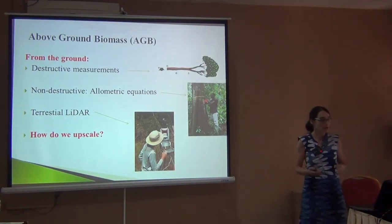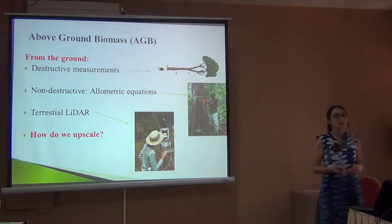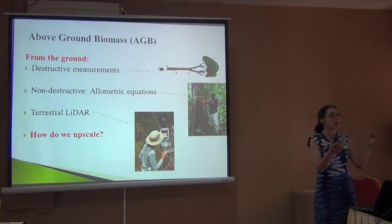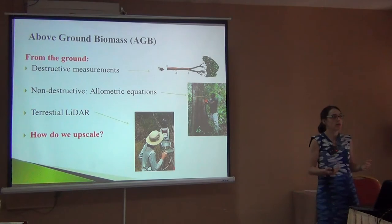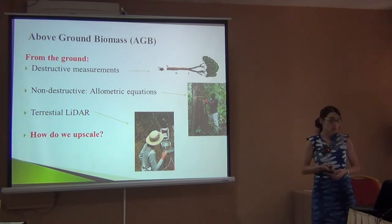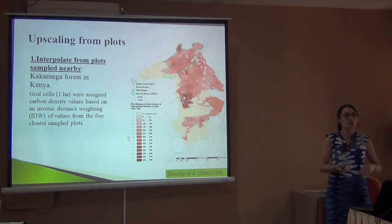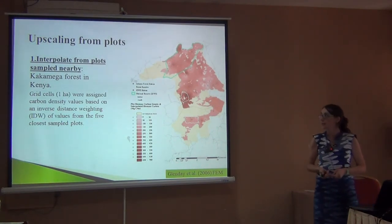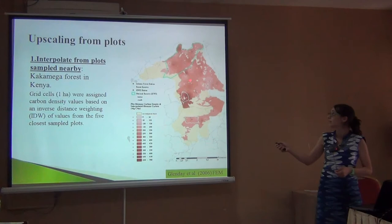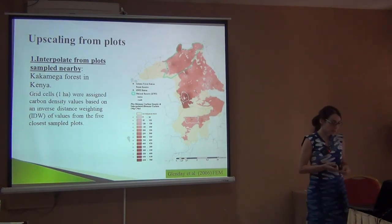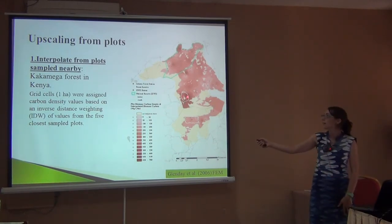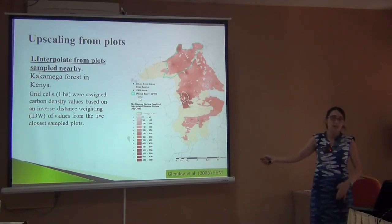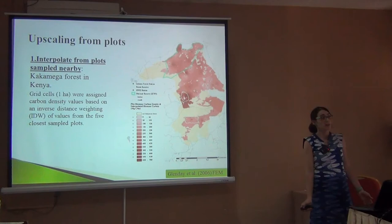The question then is: we know how to measure our trees, but how do we upscale from the plot level — either a small plot or a one-hectare plot — to a whole protected area or carbon project range? One way is to interpolate. This is an example from Kakamega in Kenya where plots were measured in the rainforest — you can see all the black dots. Using inverse distance weighting, which you can do in QGIS, if a plot has a lot of carbon and surrounding plots also do, the area in between must have a lot of carbon too. It's straightforward and better than nothing.